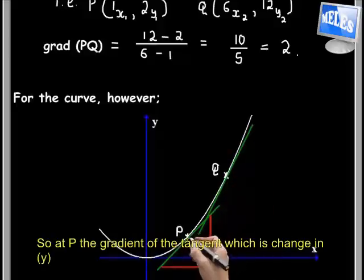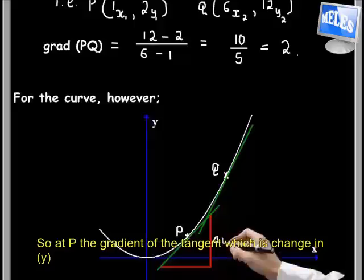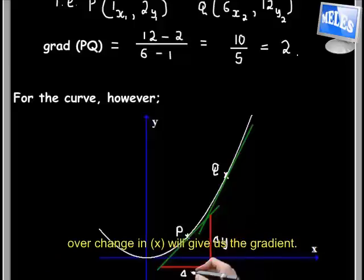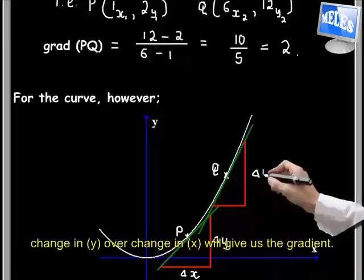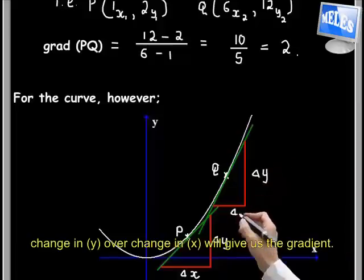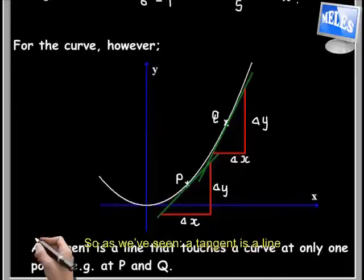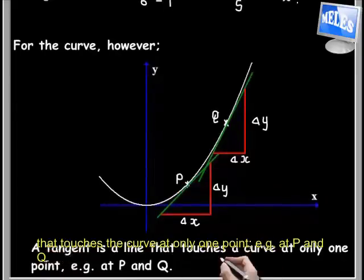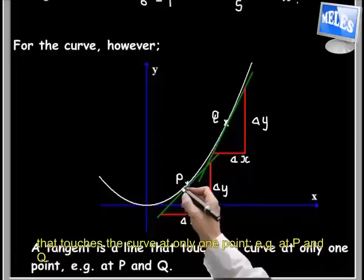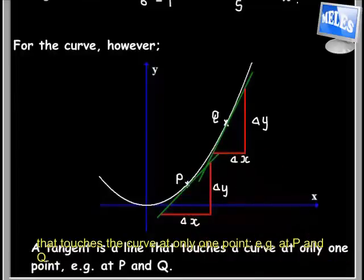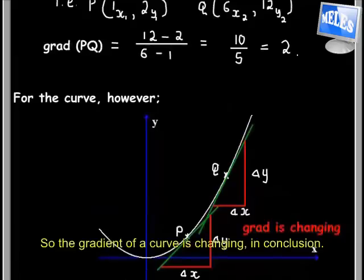So if you found the gradient of these tangents, that will be the gradient of the curve at that point. At P, the gradient of the tangent, which is change in y over change in x, gives us the gradient, and at Q, similarly, change in y over change in x will give us the gradient. So as we've seen, a tangent is a line that touches the curve at only one point, e.g., at P and Q. So the gradient for a curve is changing, in conclusion.